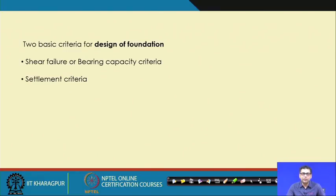When you design a particular footing, there are two basic design criteria. One is the bearing capacity criteria or shear failure criteria, and another is the settlement criteria. The footing must be capable of taking the load coming from the superstructure and at the same time there should not be excessive settlement. You check these two criteria separately to decide what load you can put on that footing, or for a particular loading, what the dimension and depth of the foundation should be.